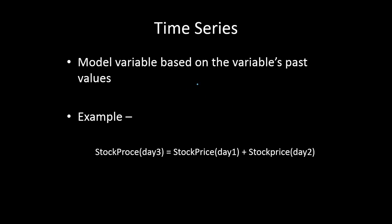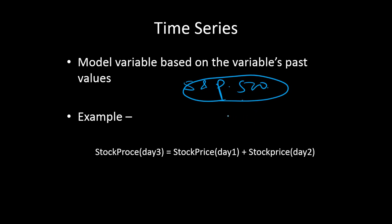The most famous analysis done on a daily basis by financial service companies is forecasting the stock price and stock indexes. For example, the S&P 500 is an index with stock price index values for different periods — period 1, period 2, period 3, and so on. These are historical prices, and if somebody wants to forecast for the future, they use this historical data series.